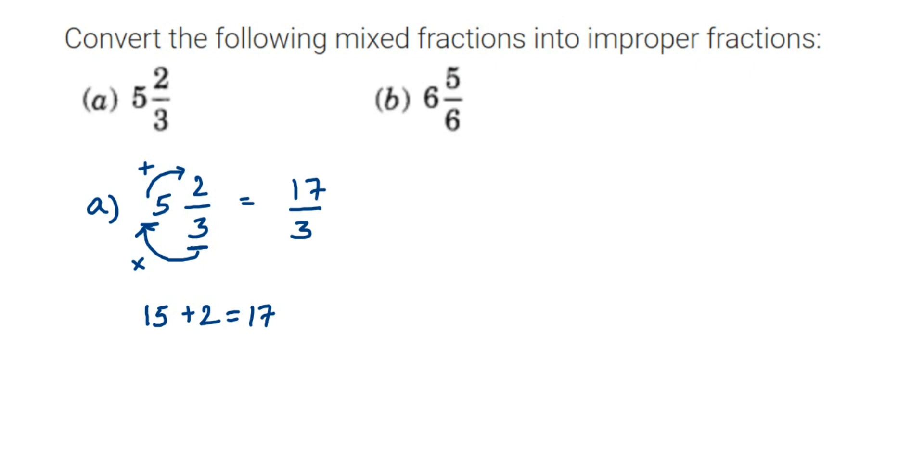Same thing we're going to do with the second one. In the second one we have 6 5/6. So we have to do multiplication first. Multiply these two numbers. Six times six is 36. We got 36. Now add with the numerator, so 36 plus 5 is 41. This is equal to 41/6.